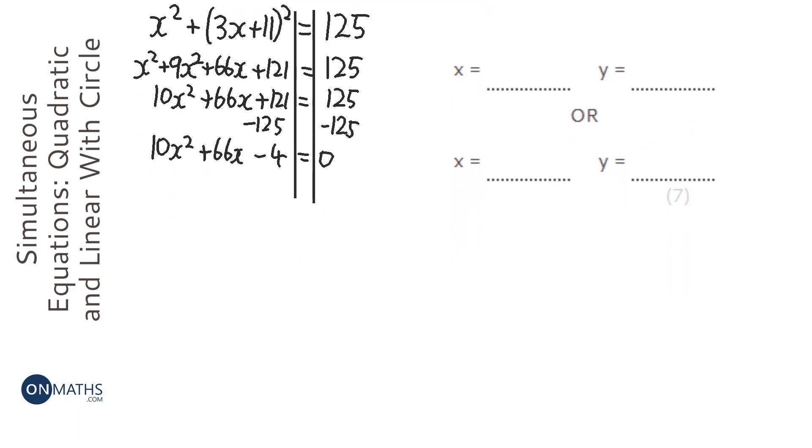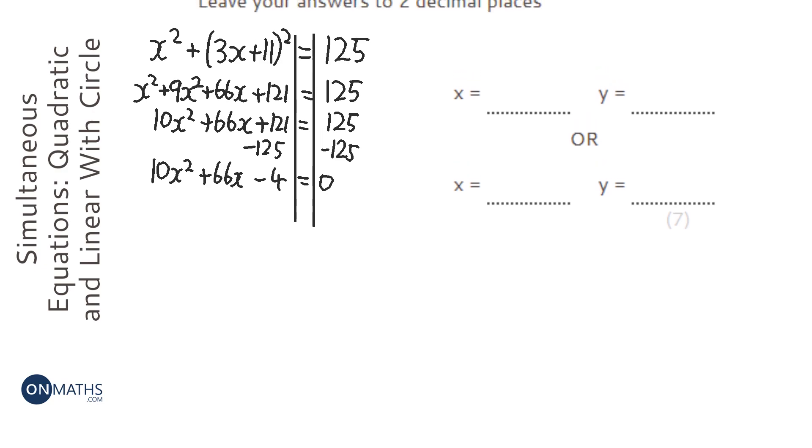OK, now we've got a quadratic equation. So we've got a equals 10, b equals 66, and c equals minus 4. So we need to know the quadratic formula, which is minus b plus or minus square root of b squared minus 4ac over 2a.